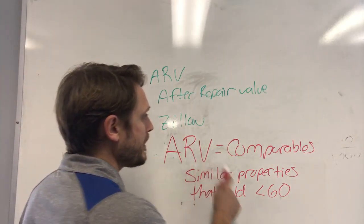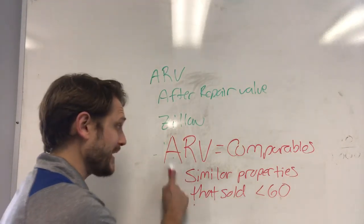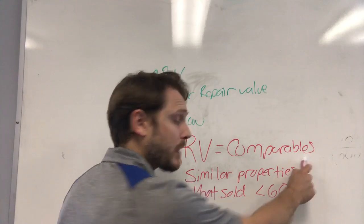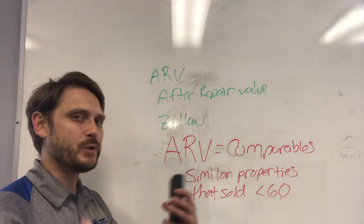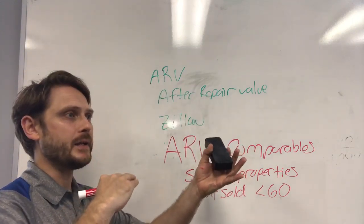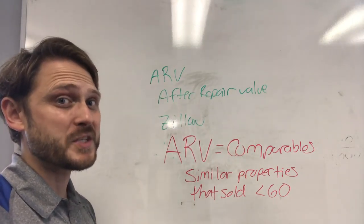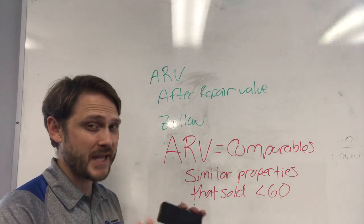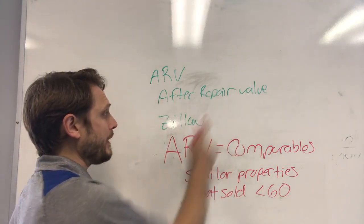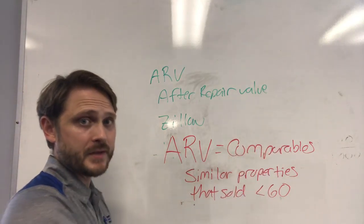ARV equals comparables. There isn't really a calculator you can use to calculate ARV because you have to find three properties that are similar. I usually average those sale prices together, or just take the lowest one — I usually take the lowest one because that's where you want to stay conservative when doing your ARVs.